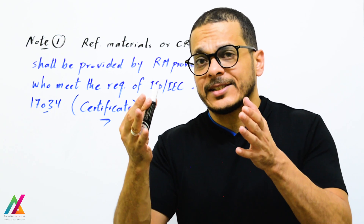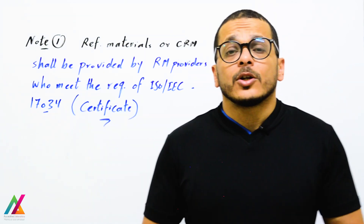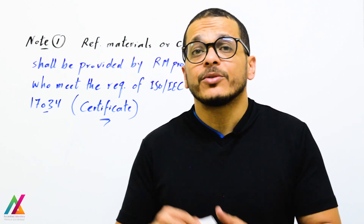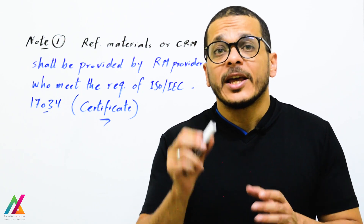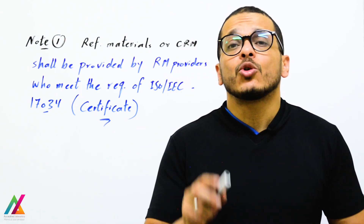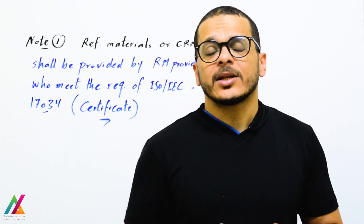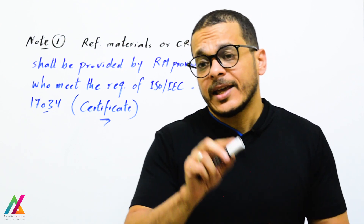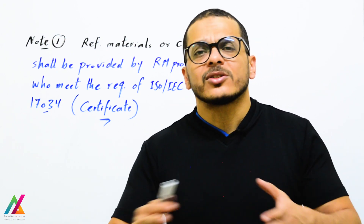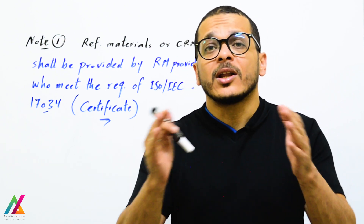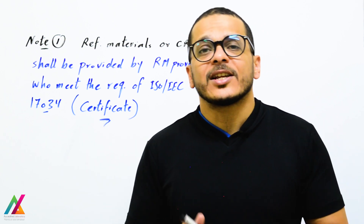If you analyze the CRM sample and get a result within the acceptable range, it is accepted; if outside, it is failed. This is different from a proficiency testing (PT) sample, which is an unknown sample received from a PT provider meeting ISO IEC 17043 requirements. After analyzing the PT sample, you send results back to the provider, who calculates the Z-score and measurement uncertainty for each target analyte, then provides the acceptable range. Pass if within range, fail if outside.